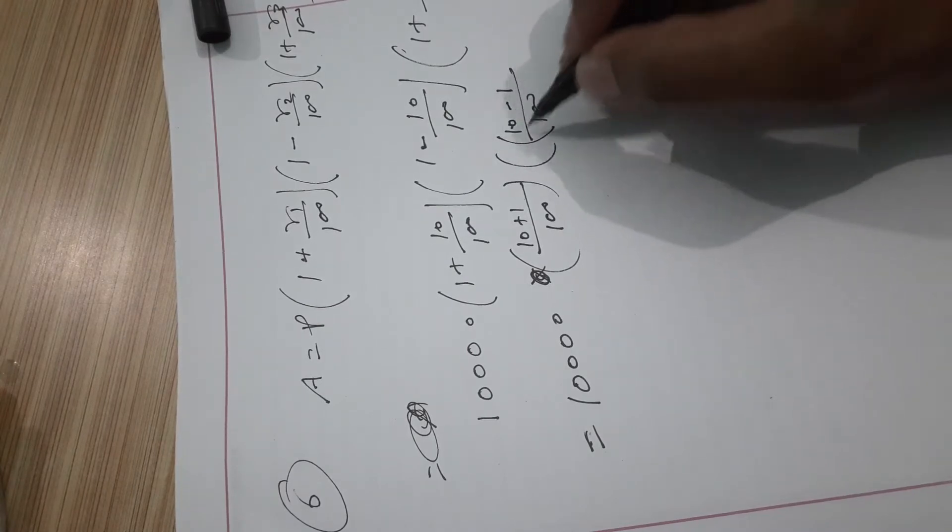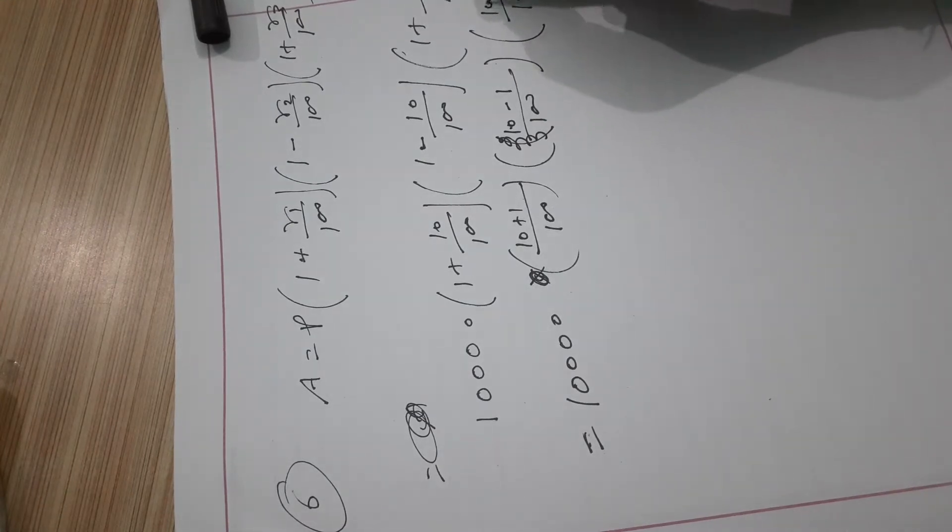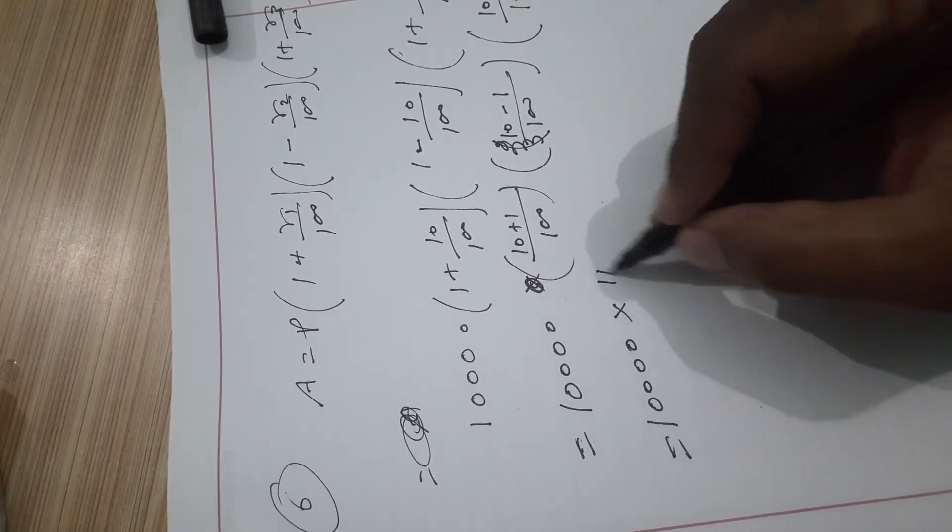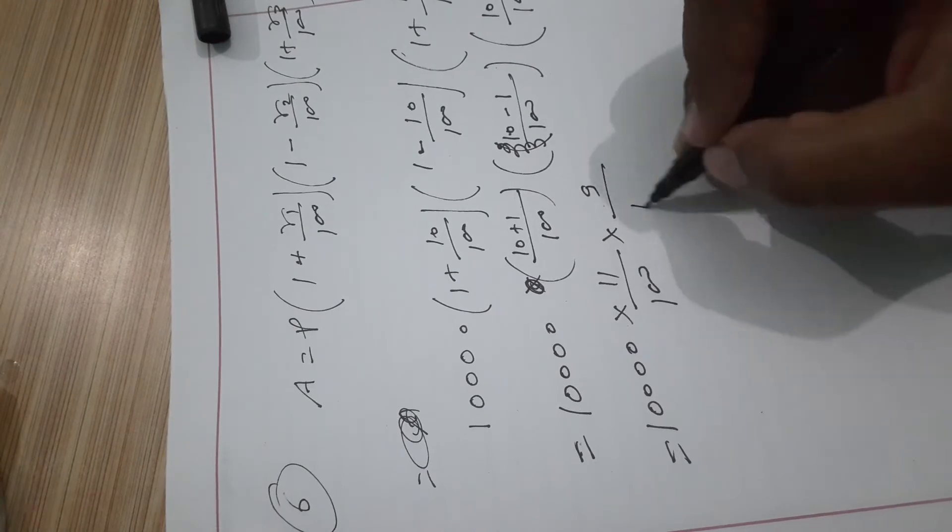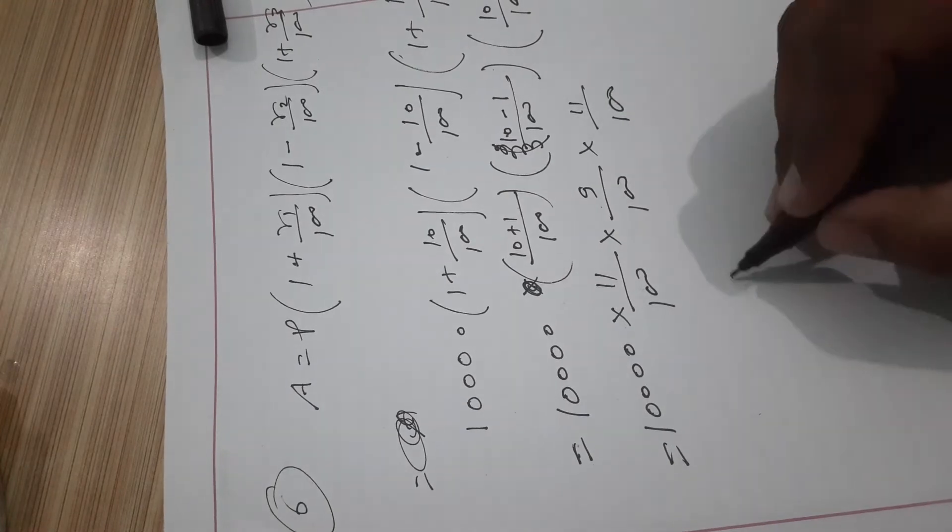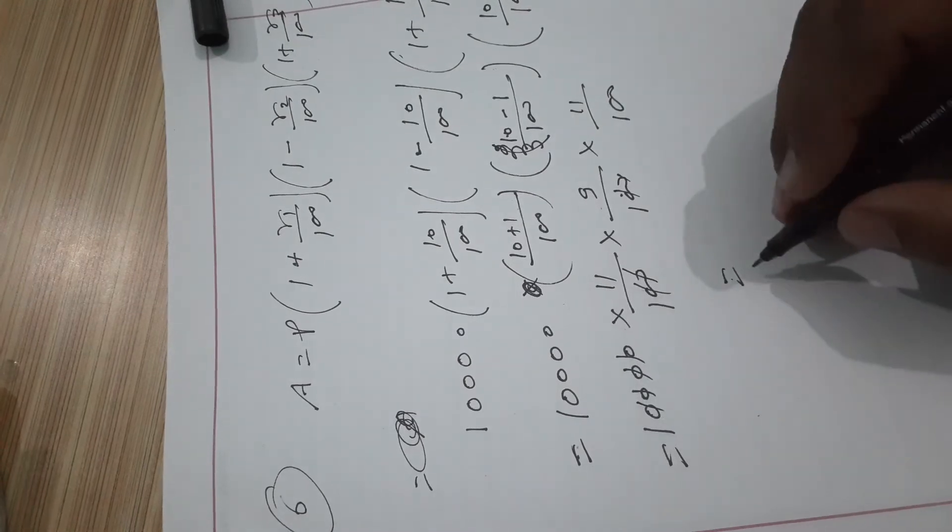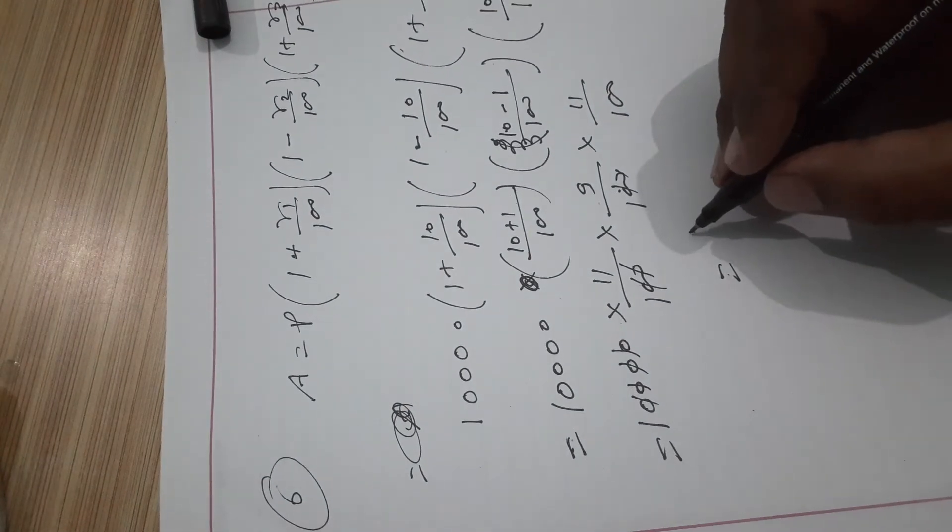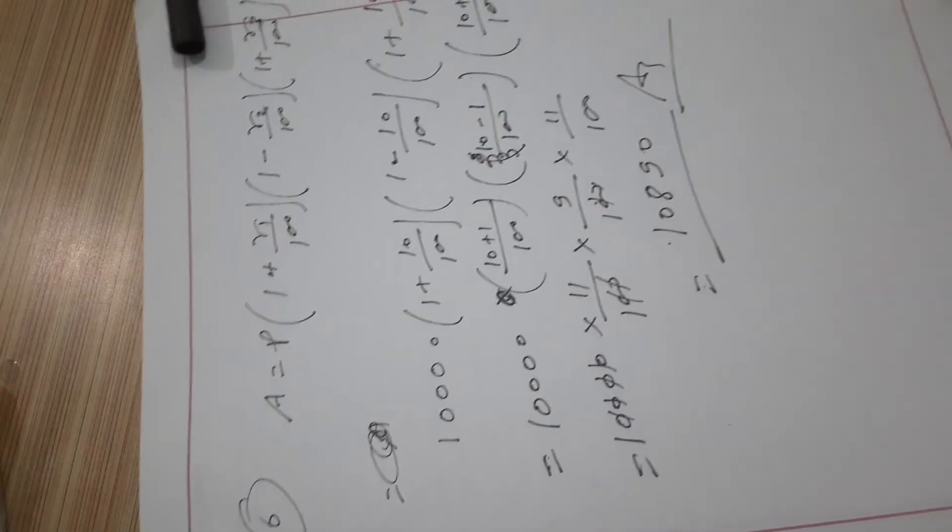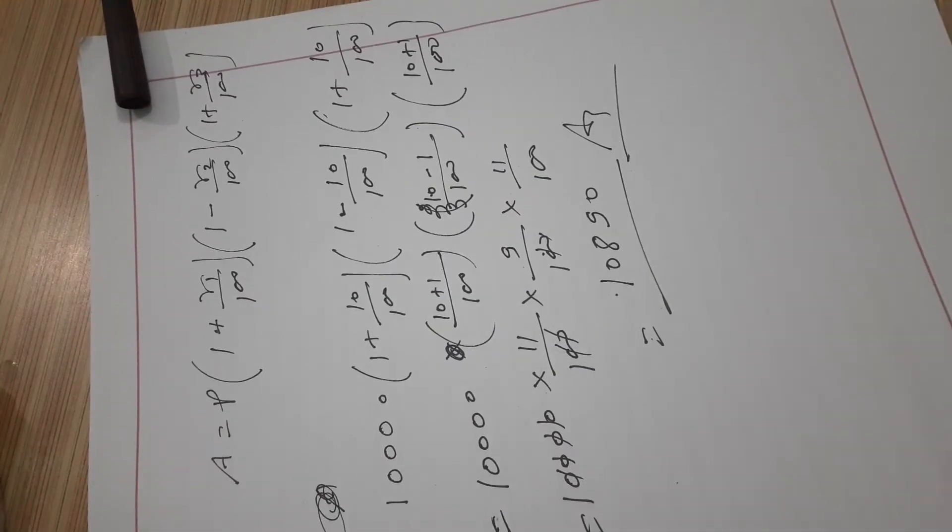That's 1,234,000 times 11/10 times 9/10 times 11/10. After calculation, the answer for question number 6 is 1,210,890.